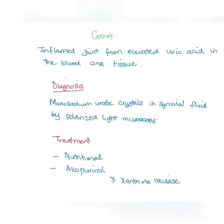The next disease is called gout. Gout is an inflammation of the joint, usually when there is an increase in uric acid in the blood or in the tissue. To diagnose this, we usually use a polarized light microscope and look for monosodium urate crystals, which are usually yellow to orange in synovial fluid. For treatment, it includes nutritional treatment, reducing the consumption of liver or other organs, and also a drug called allopurinol. Allopurinol inhibits xanthine oxidase, which converts hypoxanthine to xanthine or xanthine to uric acid. If there is inhibition of xanthine oxidase, uric acid will be reduced or will not be produced.